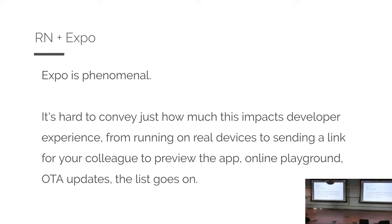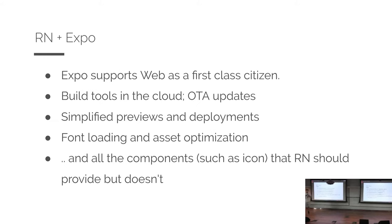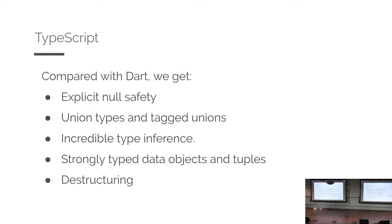Expo really impacts the developer experience, especially early on in projects. You send an Expo link to someone, they open it up and immediately have a reproducible thing — especially with Expo Snack. It supports web as a first-class citizen, you get build tools in the cloud, over-the-air updates, font loading, asset optimization — things that really should be in React Native core, like icons. That should ship with React Native.